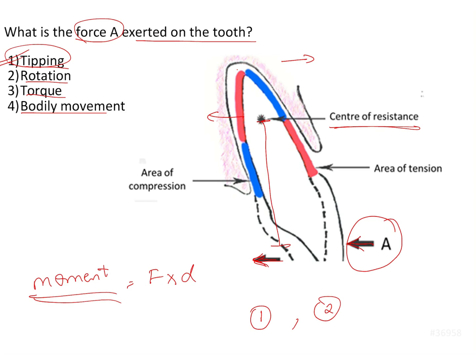This can be appreciated by the loading diagram marked in red and blue, which tells us the areas experiencing tension and those experiencing compression. The root is moving in one direction, which is why that area gets compressed, and the crown is moving lingually, which is why the lingual area is being compressed. This loading diagram shows how the PDL is being loaded when the force is applied. This rotational tendency occurs because the force is acting away from the center of resistance, producing both rotational and displacement tendency.